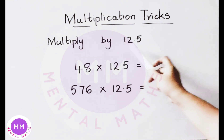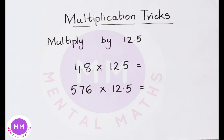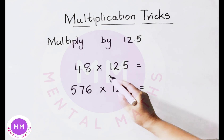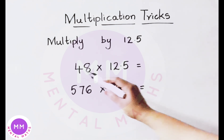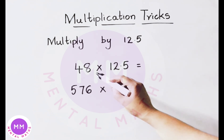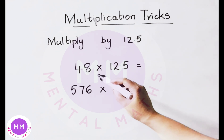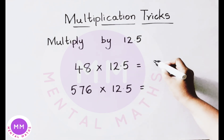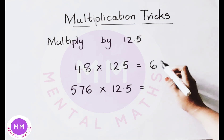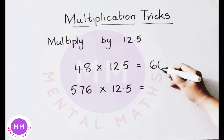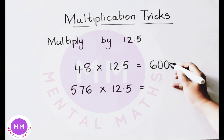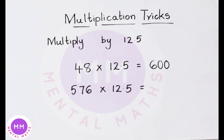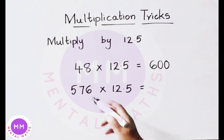Next trick: how to multiply any number by 12.5 quickly. See the example: 48 multiplied by 12.5. Divide the given number by 8, then multiply by 100. 48 divided by 8 gives 6. Now multiply this value by 100 — add two zeros at the end — so the answer is 600.